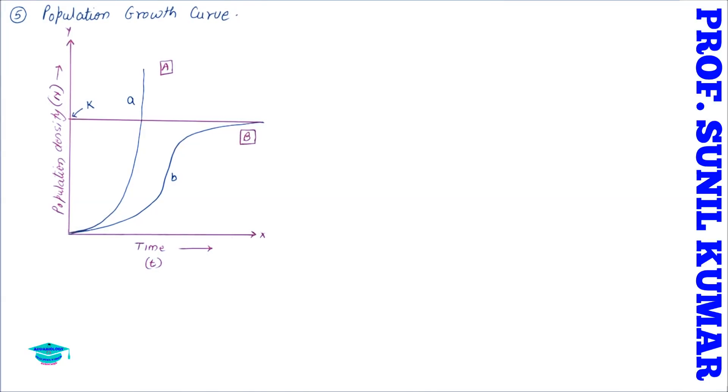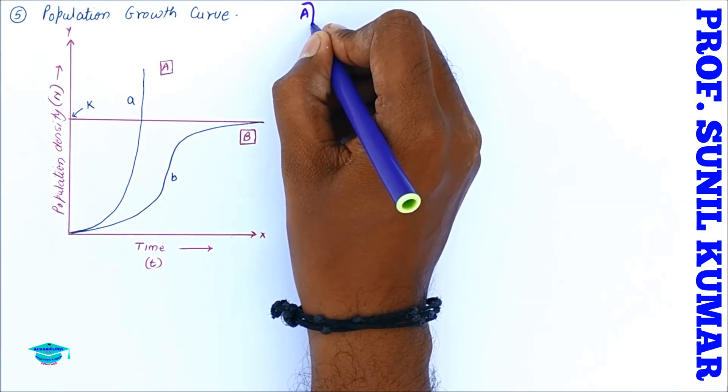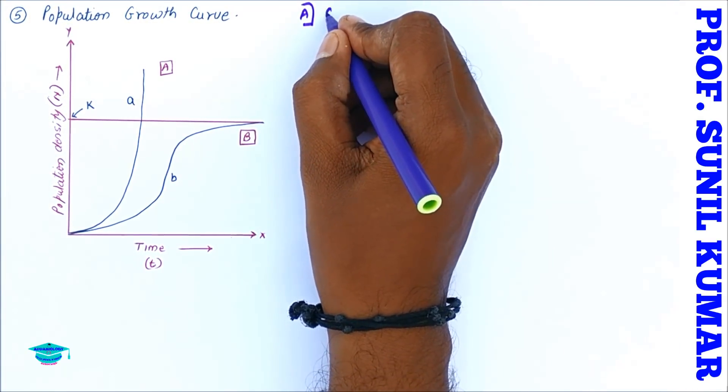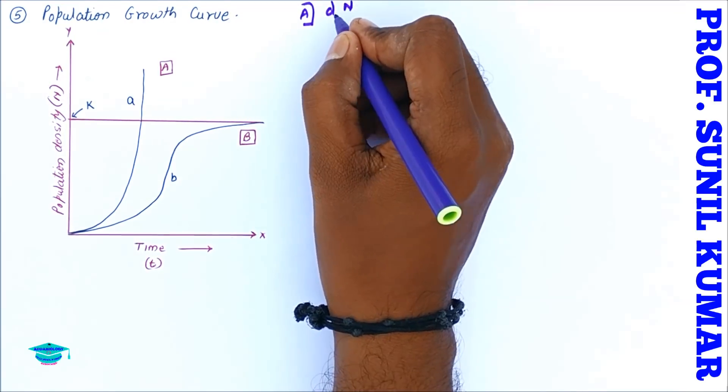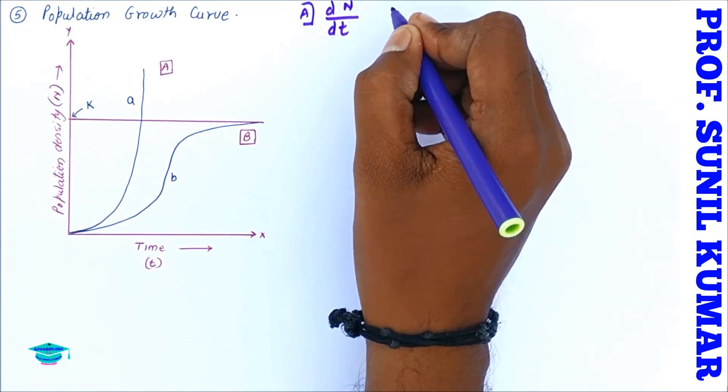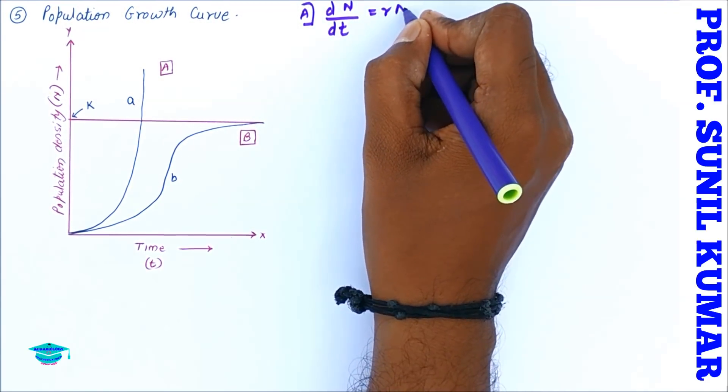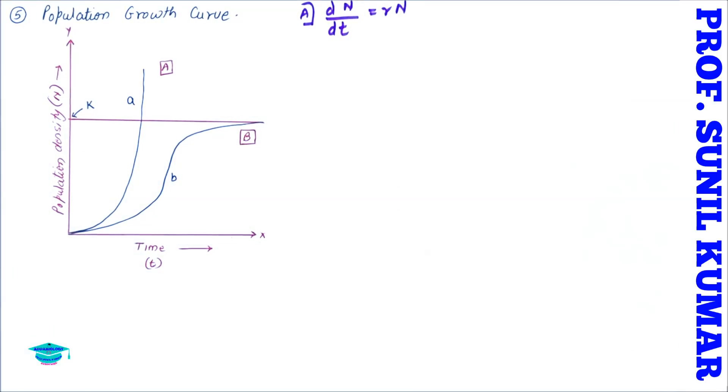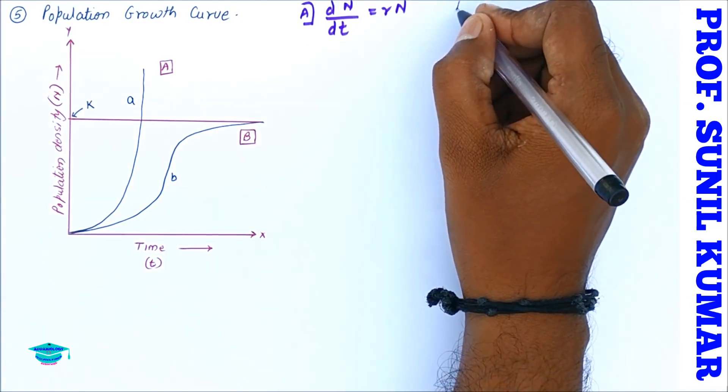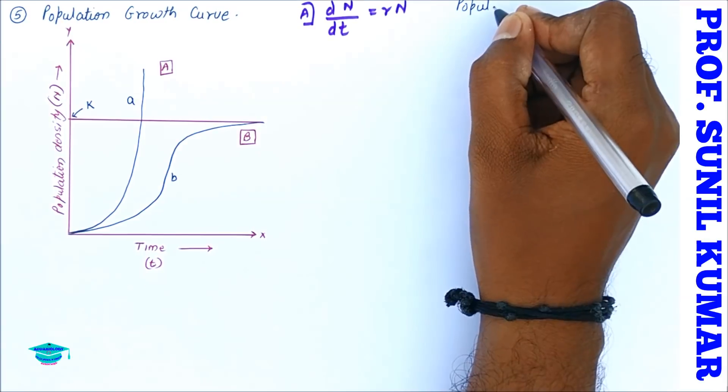The growth curve is of two types: one you can say as capital A, the other one is called as capital B. For capital A, we need to understand there is a straight formula: dN/dt is equal to rN. When you look at capital A graph, you will see it is showing exponential growth where it has crossed the K, which is the carrying capacity.